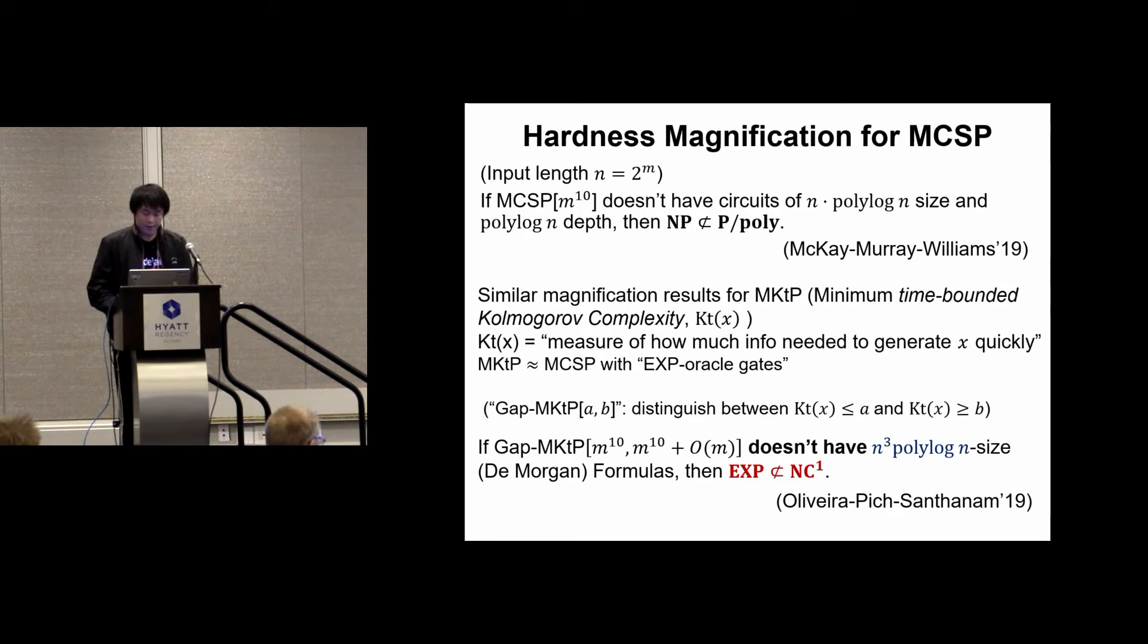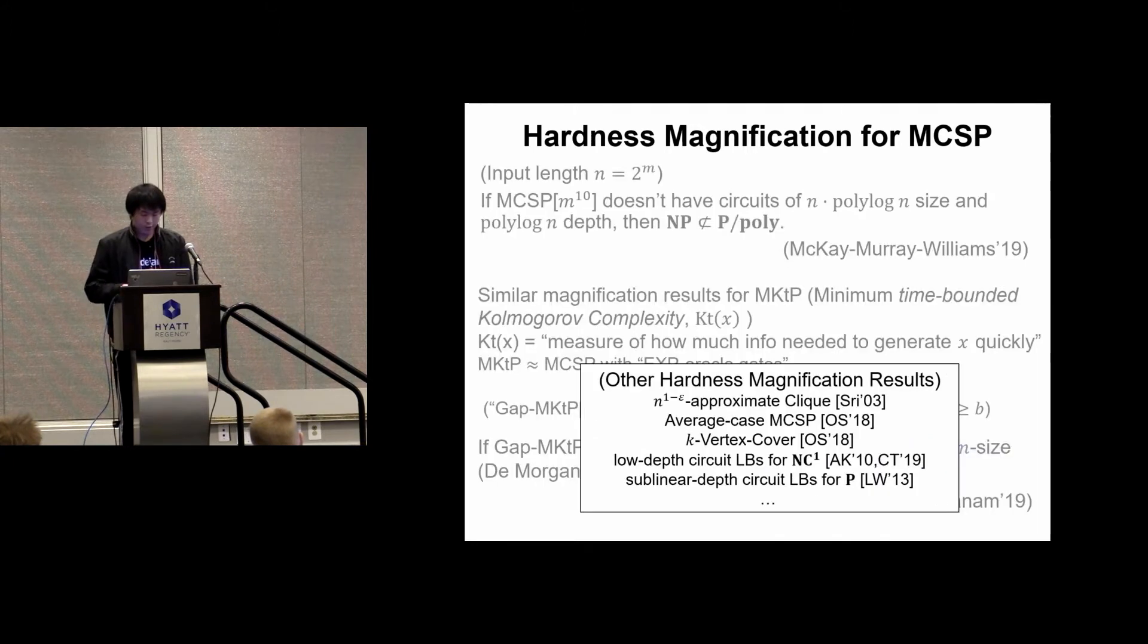I have listed two previous results most relevant to this talk, but there are many other hardness magnification results from literature. For example, if approximate max clique requires super linear circuits, then NP is not in P/poly. Or if k-vertex cover is not solvable in near linear time and small space, then P is not equal to NP.